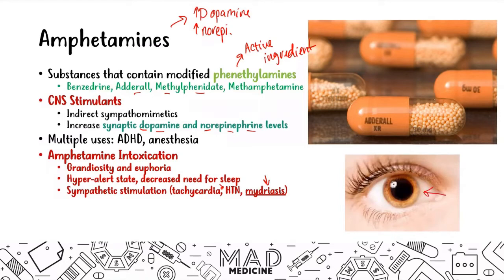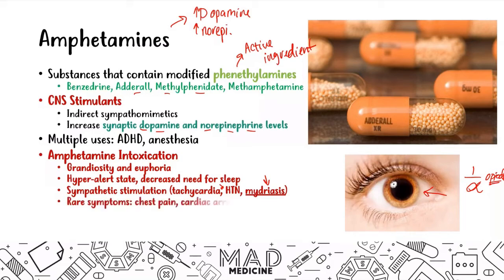Mydriasis is pupillary dilation. If you remember from our previous video on opioids, opioid intoxication causes pupillary constriction, and opioid withdrawal causes mydriasis. With amphetamines, it's the opposite — intoxication causes pupillary dilation, i.e., mydriasis. Rare symptoms that can occur with amphetamines include chest pain, cardiac arrest, and seizures, because of the sympathetic stimulation occurring.